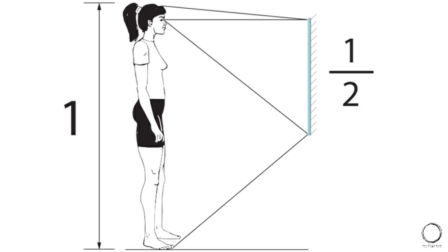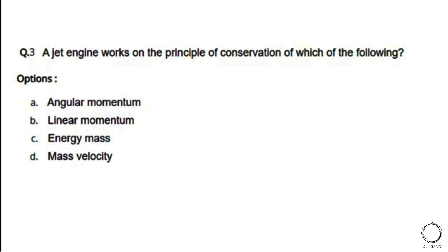Next: A jet engine works on the principle of conservation of which of the following? Options: a) angular momentum, b) linear momentum, c) energy, d) mass velocity. The right answer is option B — linear momentum.